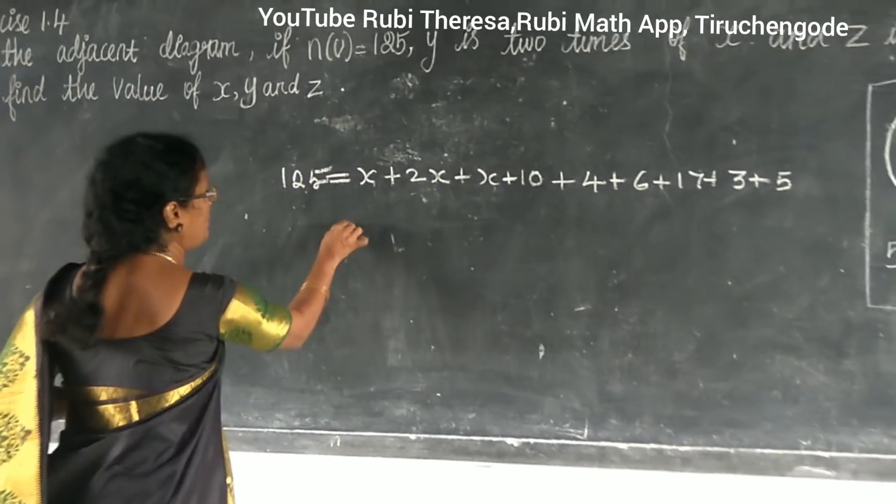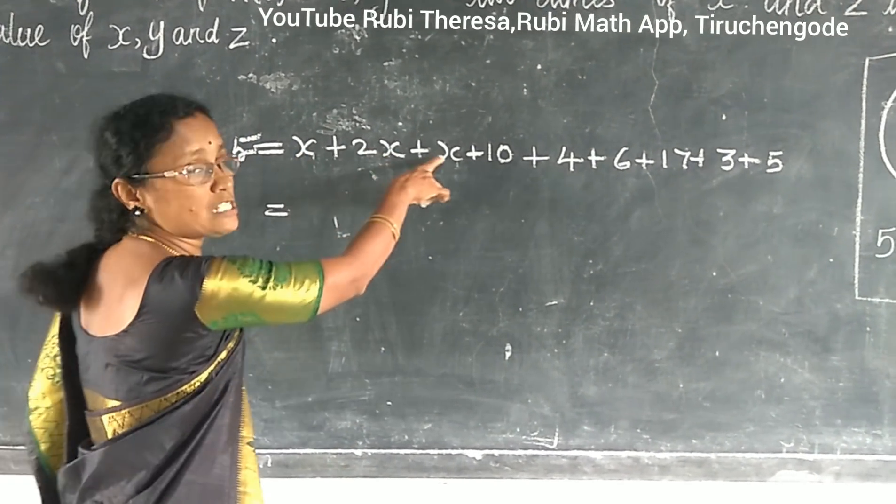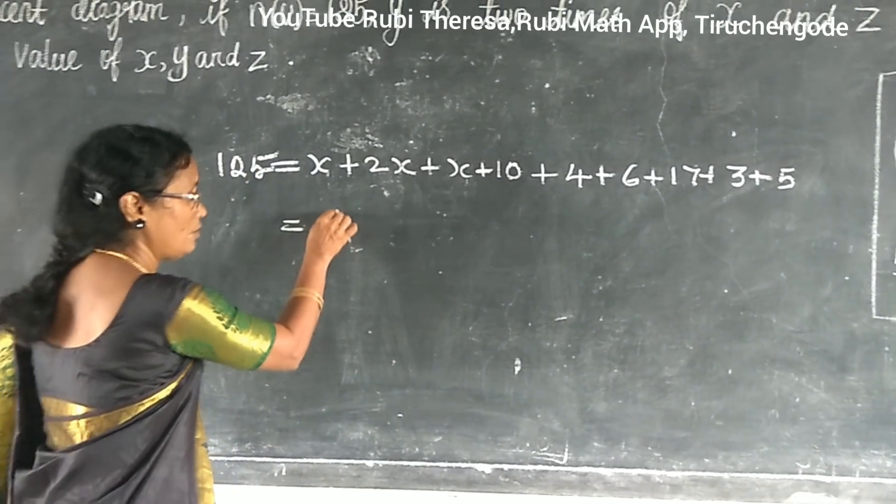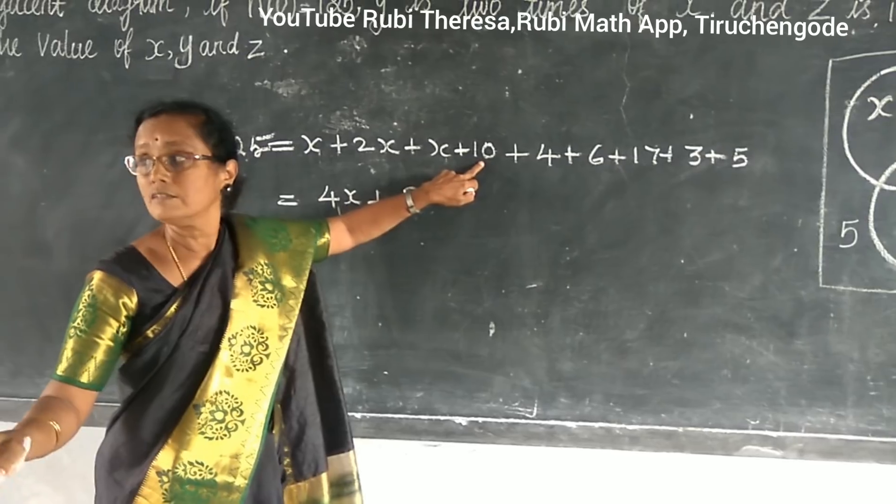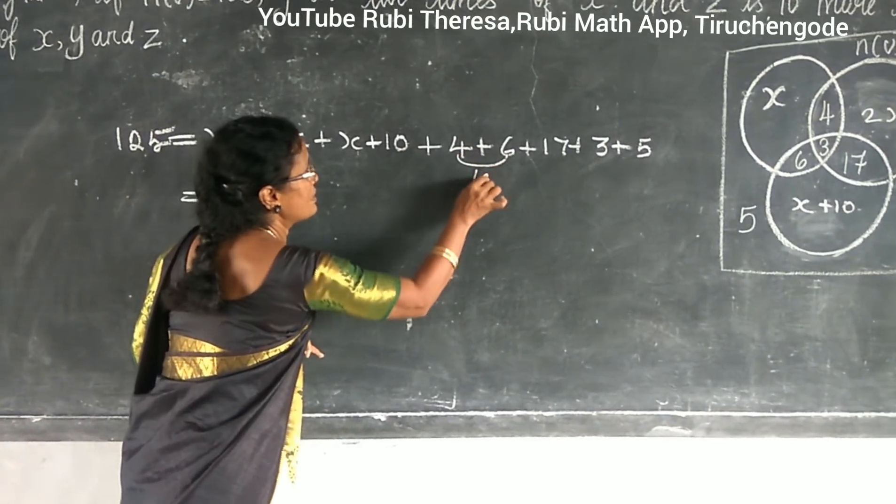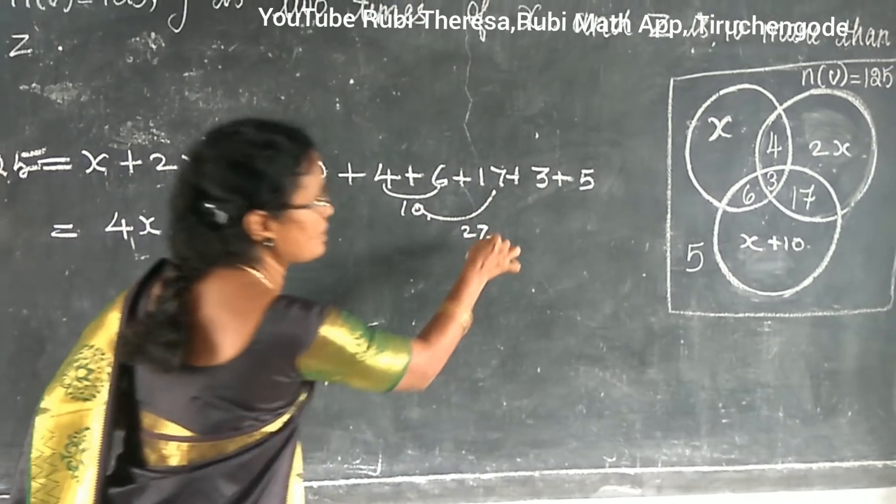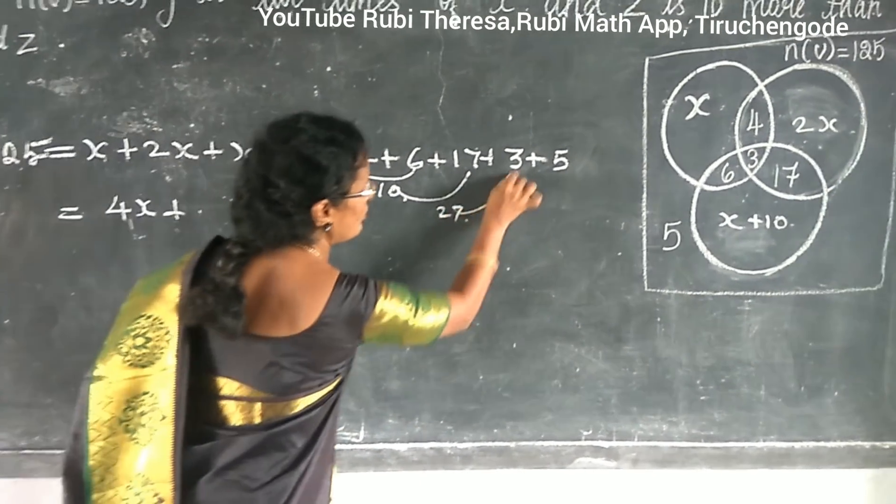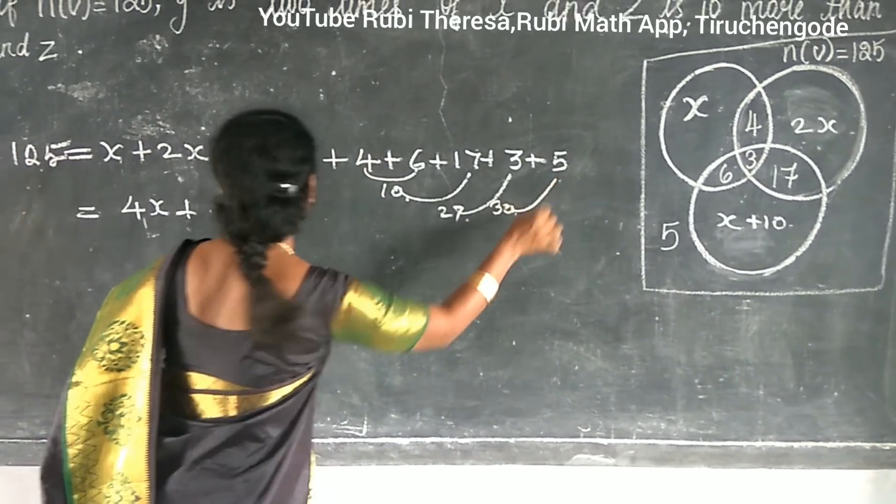So just you add and tell me one of you. First you add this X. X plus 2X plus X. How many? 4X. Plus one of you add and tell me this. 4 plus 6 is 10. 10 plus 17 is 27. 27 plus 3 is 30. 30 plus 5 is 35.